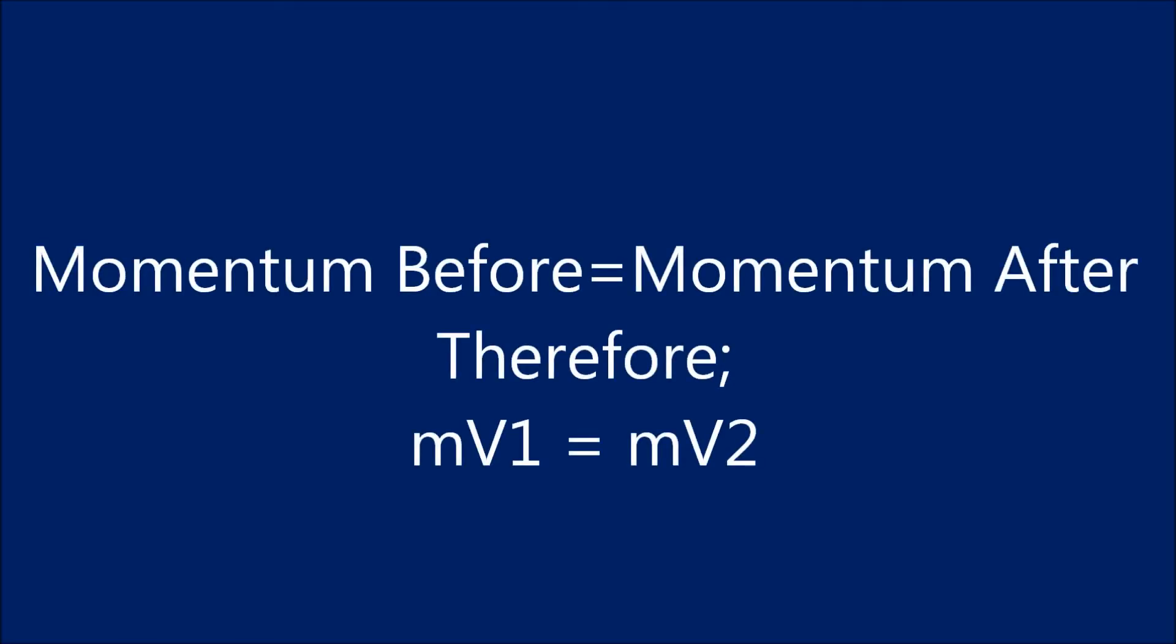The conservation of momentum states that the momentum before equals the momentum after, meaning the mass of the first object multiplied by the velocity of the first object is equal to the mass of the second object multiplied by the velocity of the second object.